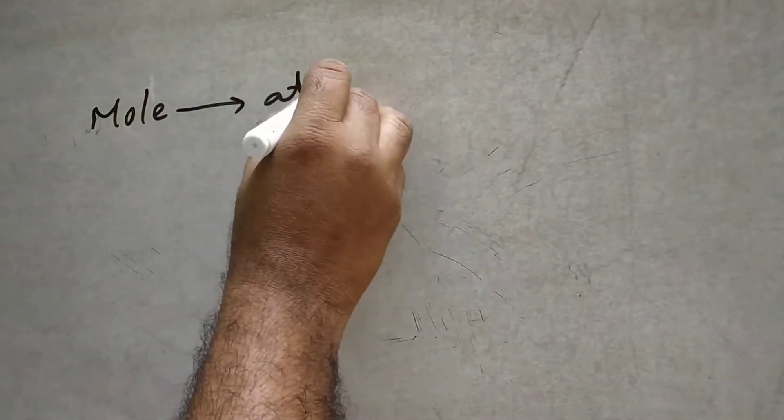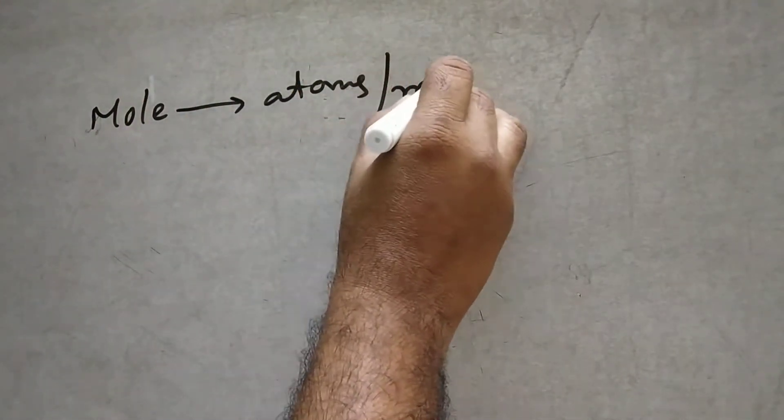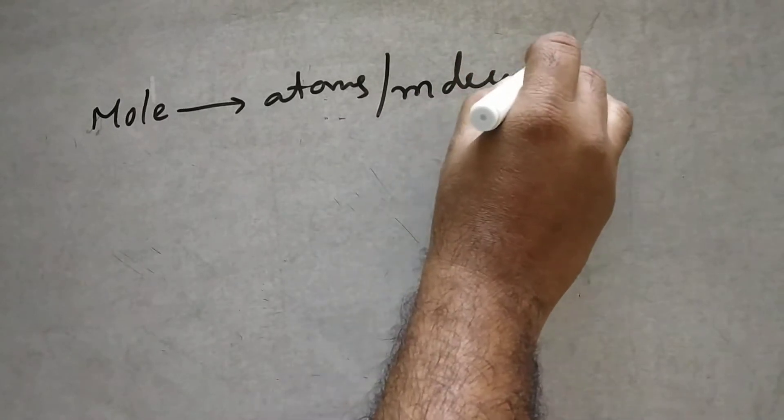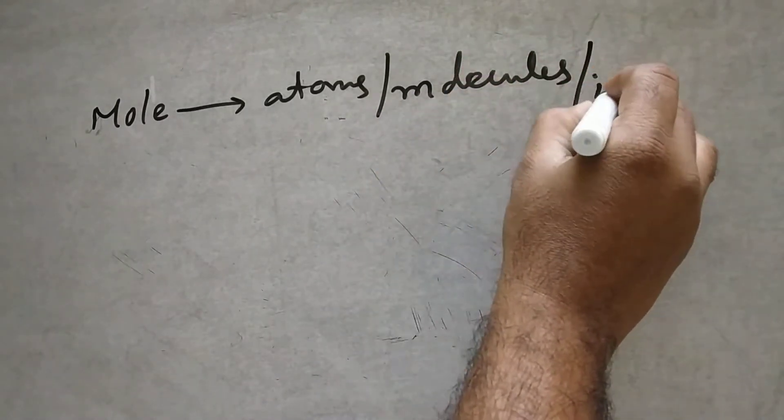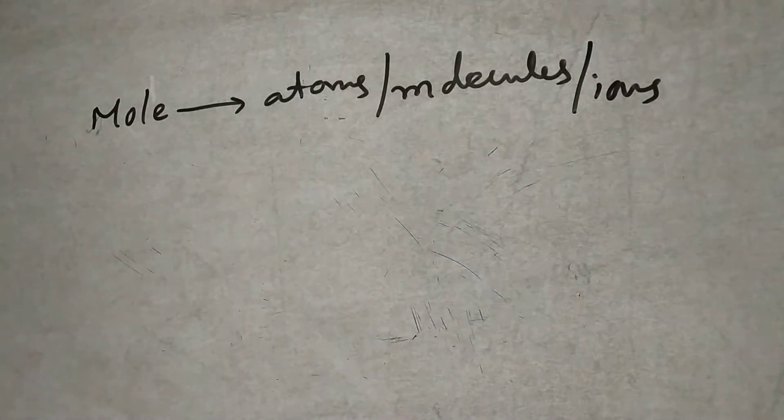Hi, this is Dr. JMR, JMR Chemistry Classes. Today I am explaining about converting moles to number of particles — how moles are converted into particles, atoms, molecules, ions, or whatever it means.